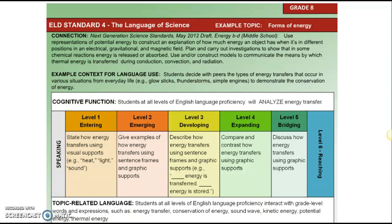You're going to be getting a copy of the accommodation form for each of our English language learners if you have not gotten it already. That's going to tell you for each domain — speaking, listening, reading, writing — what level your students are at, and that will help you to understand what they should be able to do when you are working with them in your live lessons or in an individual session, or what to expect on their assessments.